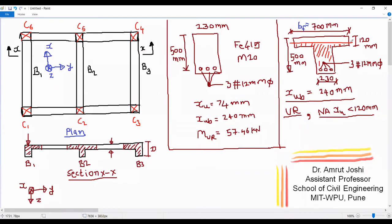We can as well consider it as a rectangular section of width equal to the width of the flange, that is BF, denoted by the notation B suffix F. So we can consider this section as a rectangular section of size BF cross D, that is 700 mm cross 500 mm. Since the neutral axis is lying in the flange, even if we consider it as a rectangular section with dimension BF into D, we neglect all the portion below the neutral axis as far as concrete's contribution in tension is concerned. Therefore, we can safely consider this cross section as rectangular.